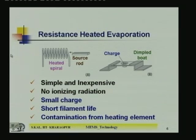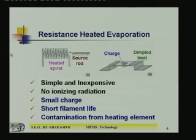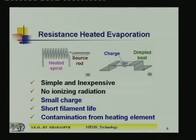The source material is inserted into the spiral. When current is allowed to flow through the coil, it becomes red hot by resistive heating (I²R heat generation). The material melts and evaporates. This arrangement is useful if the source is in the form of a rod or stick. If the source is in powder form, you need a dimple boat arrangement, where there is a small boat in the center. You put the powder charge there and apply current through the boat, causing heating and evaporation.